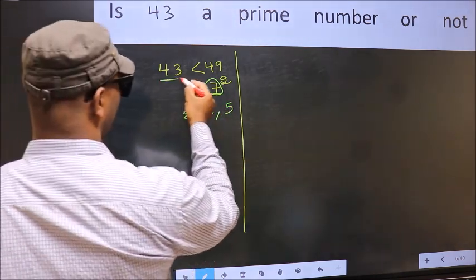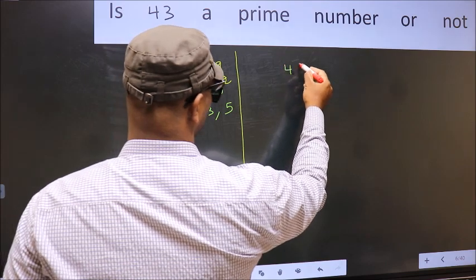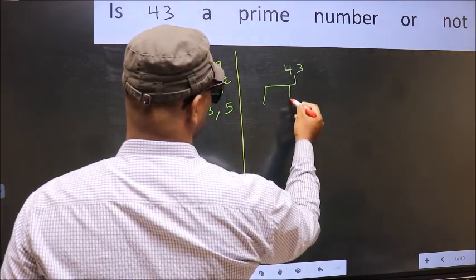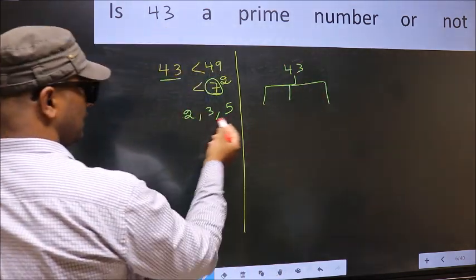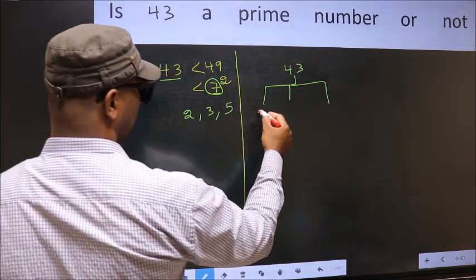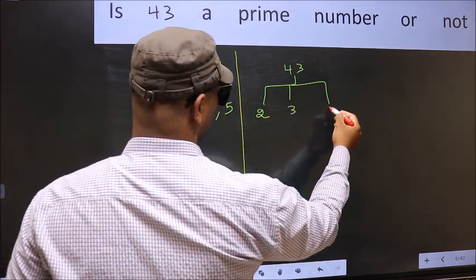Now for the given number, we should check divisibility by these numbers: 2, 3, and 5.